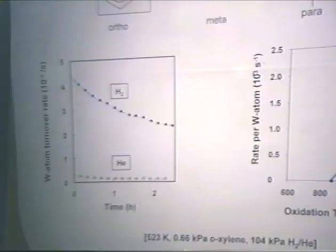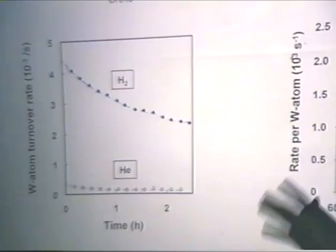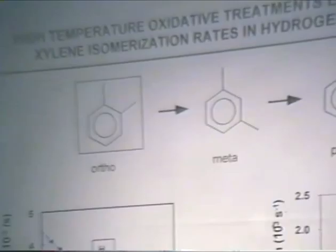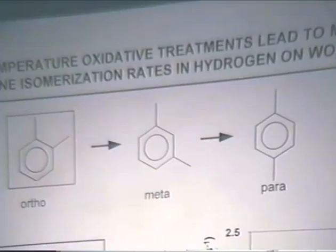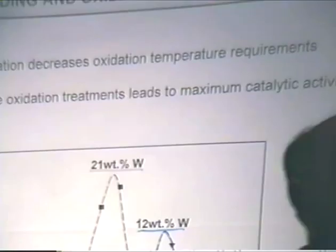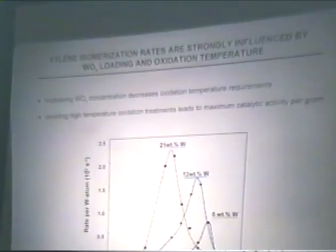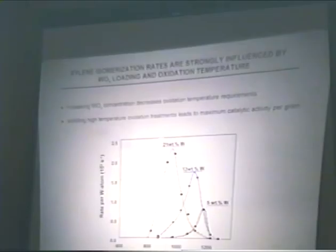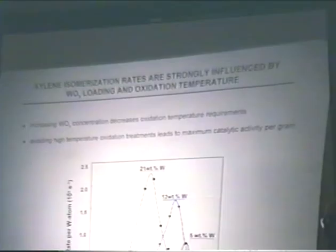The first question I would like to try to answer is why such a sharp maximum in activity, and what may be the structure of the materials that give rise to that maximum rate. We made catalysts with varying amounts of tungsten and subjected them to the same range of calcination temperatures, finding that the position of that maximum shifted to lower calcination temperatures when we increased the amount of tungsten, and to higher temperatures when we decreased it.